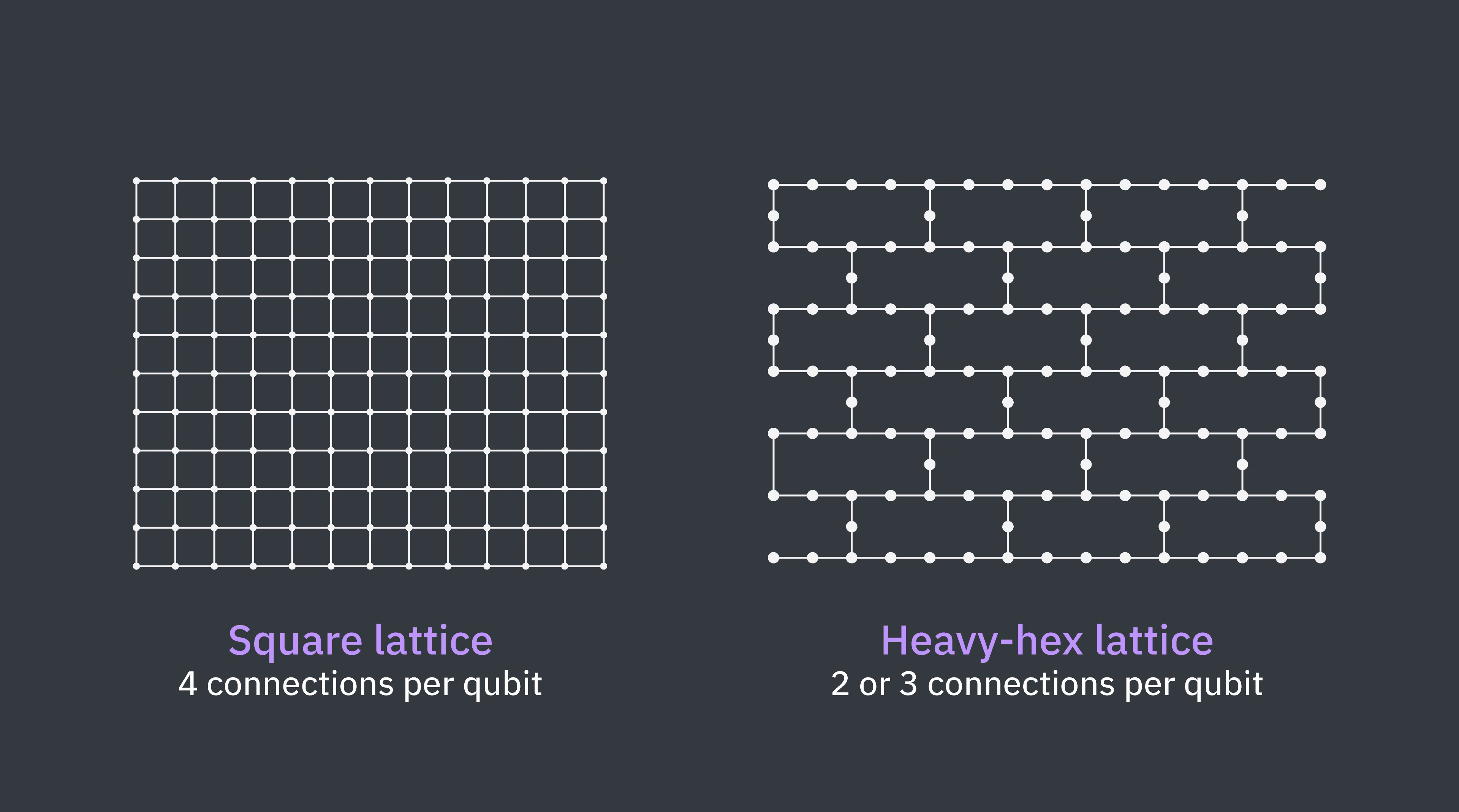This radical code advancement is one of several reasons for the prominent position of the Nighthawk processor in the IBM Quantum Roadmap. The Nighthawk chip features 120 qubits arranged in a square lattice, as opposed to the heavy hexagonal or heavy hex layout seen in previous generations, like Heron.